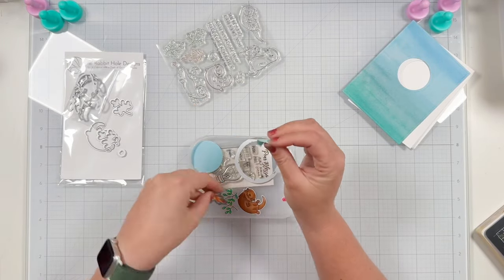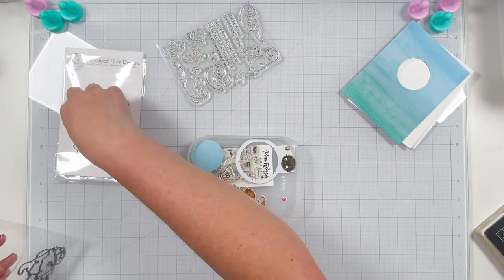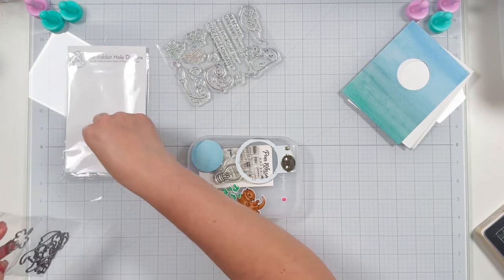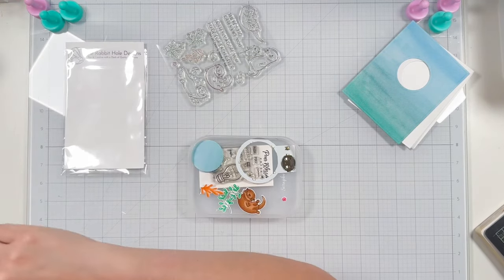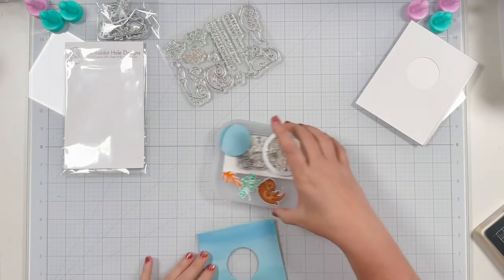So I went ahead and used some repositionable tape to keep those dies in place and die cut out all of my images. So I'll get this die set put away and then we're going to move on to do a little bit more stamping this time our sentiment onto the watercolor background.